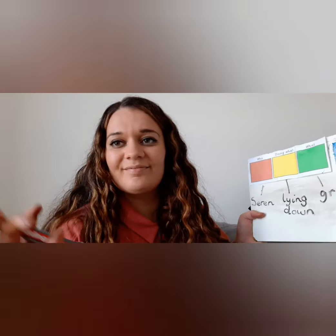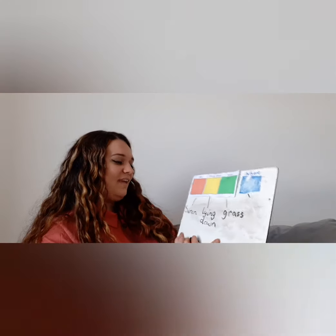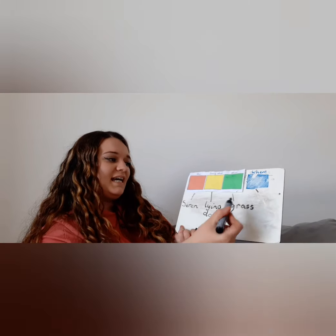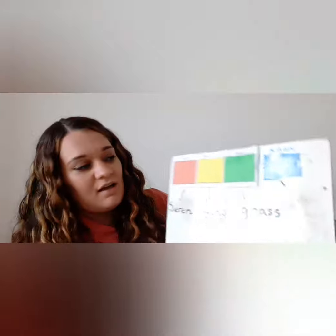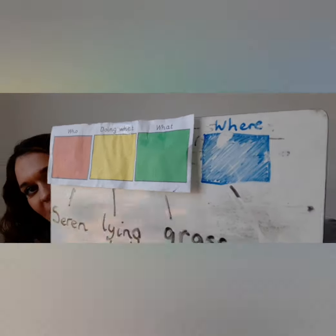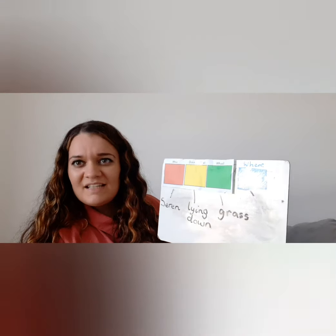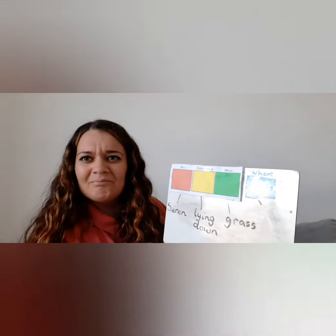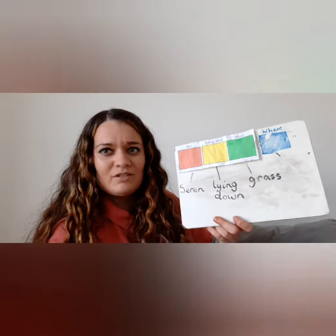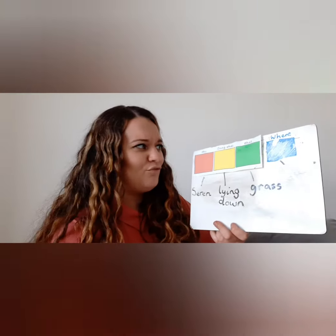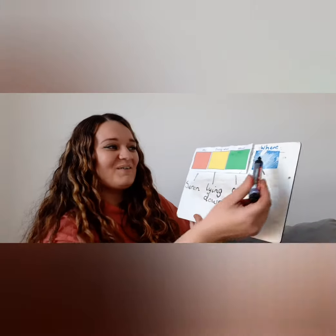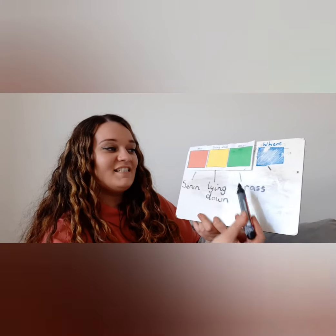Can you see that? It's a little bit faint. Let me try and find another one. Found a bit of a better one. Okay. Seren lying down. Grass. We have one last colour. What colour is it? Balloon — what does it mean? Where? Oh, where did that go? Let's go. So it's where. Seren lying down. Grass. Where?